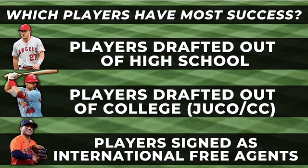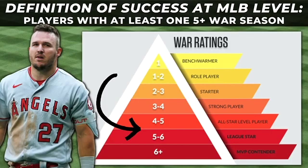Now that we have distinguished our three subgroups, let's create a concrete definition for success at the MLB level. WAR is one of the most popular statistics used in Major League Baseball to measure a player's value offensively and defensively. You can see a breakdown of how WAR is measured: one being MLB benchwarmers, one through two MLB role players, two through three being an average MLB big leaguer, three through four being a solid MLB player, four through five encompassing all-star caliber players, five through six including league stars, and players with six-plus WAR being potential MVP candidates. In my data, I chose to use players with a five-plus WAR, which is in between all-star and league star caliber players.